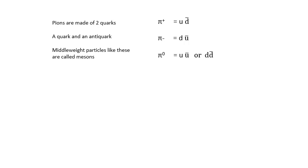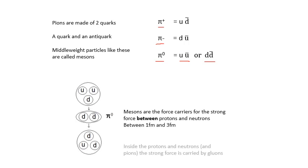A bit about pions. Pions are made of two quarks — a quark and an anti-quark. There's pi plus, pi minus, and pi zero. Pi zero can be up-anti-up or down-anti-down, so there are two types of pi zero. Mesons are middleweight particles because they only have two quarks, while baryons have three. Mesons are the force carriers for the strong force — they carry the force between protons and neutrons. Inside protons and neutrons it's actually about gluons, but we don't need to know that.